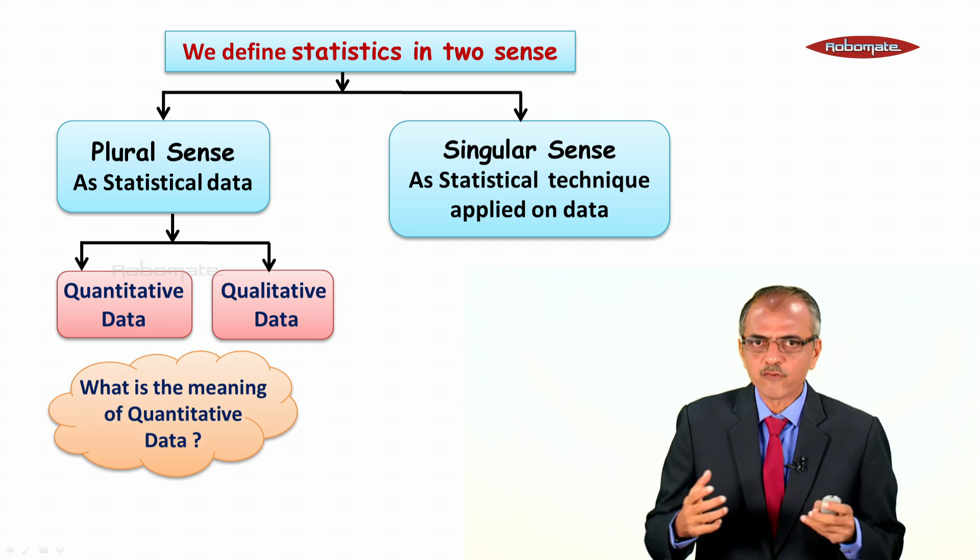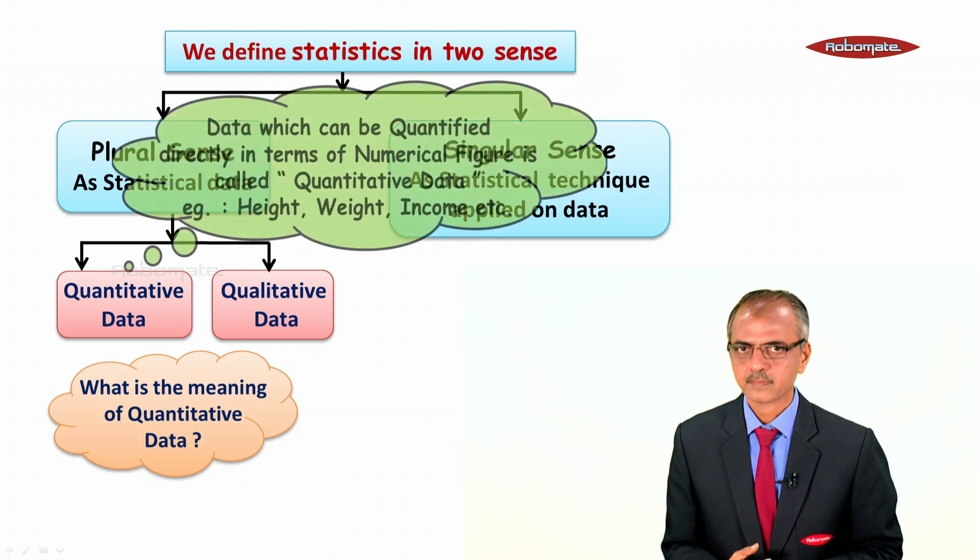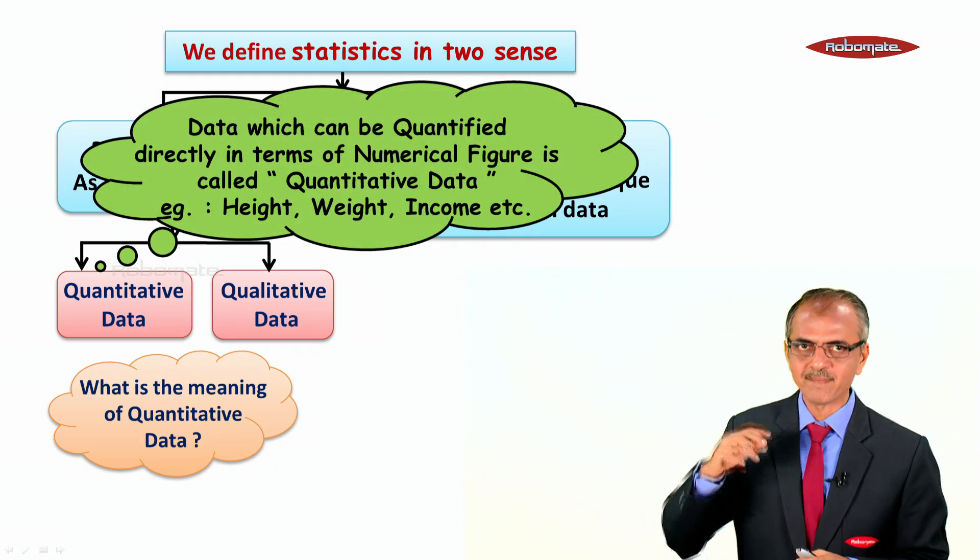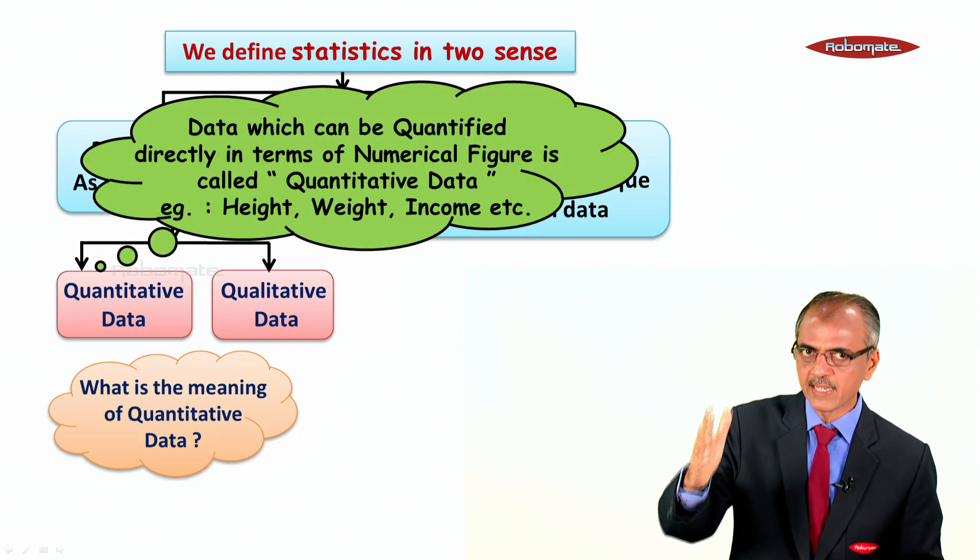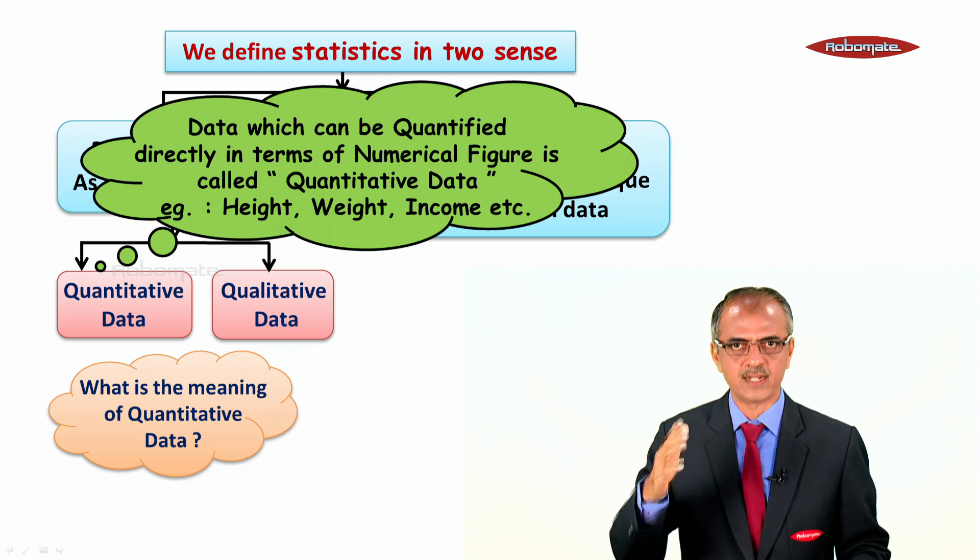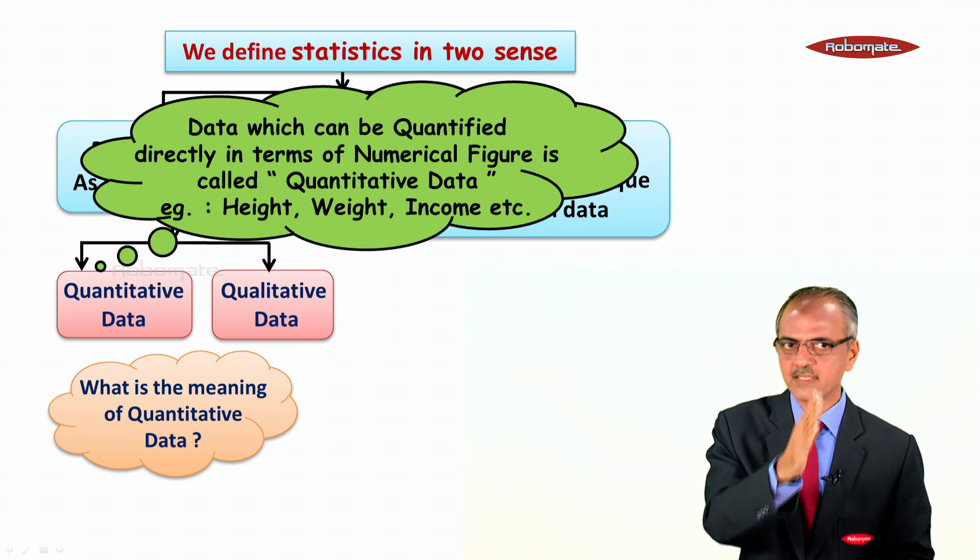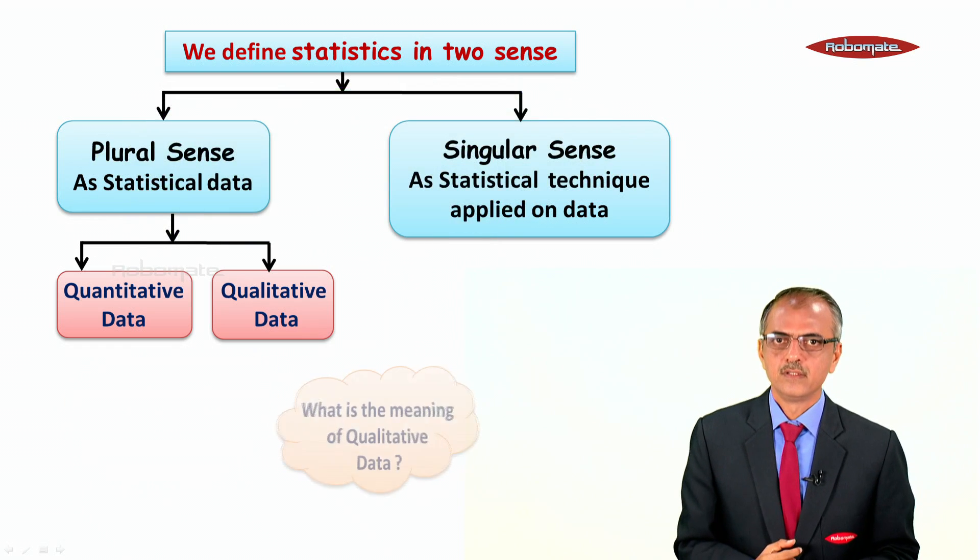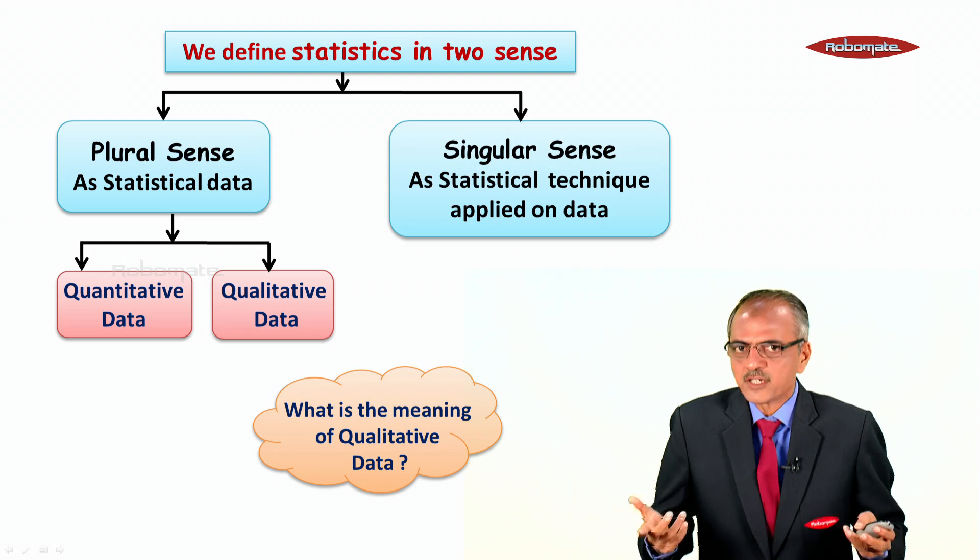What is the meaning of quantitative data? Data which can be quantified directly in terms of numerical figures is called quantitative data. Examples include height, weight, income, etc.